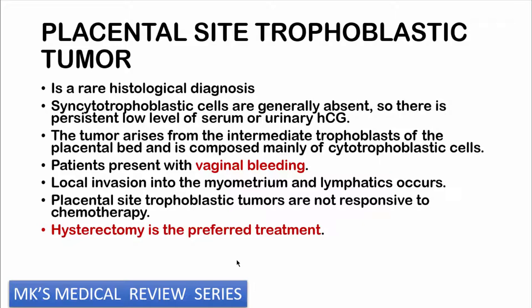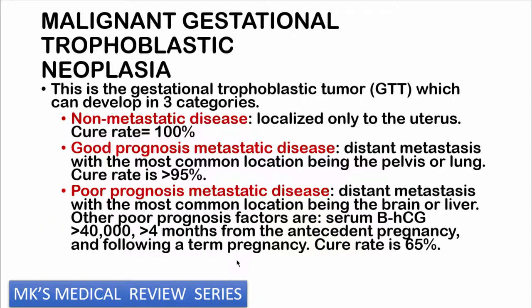Placental site tumours are usually a histological diagnosis. Syncytial trophoblastic cells are generally absent, so there will be persistently low levels of serum and urinary beta-HCG. The tumour arises from the intermediate trophoblasts of the placental bed and consists mostly of cytotrophoblast. Patients present with vaginal bleeding and there may be local invasion into the myometrium and lymphatics. Placental site tumours are not responsive to chemotherapy, so hysterectomy is the preferred treatment modality.